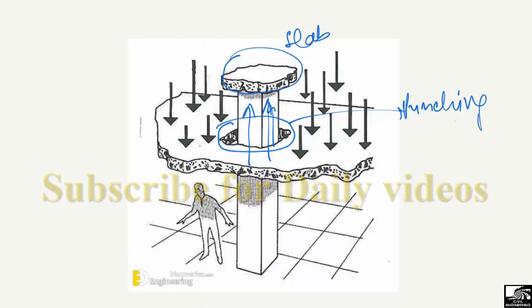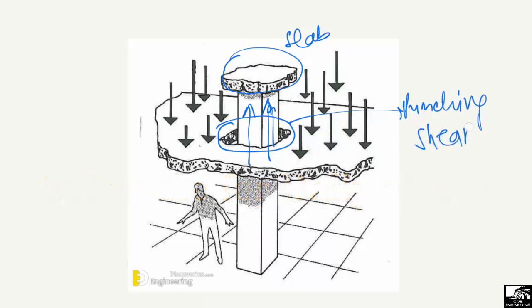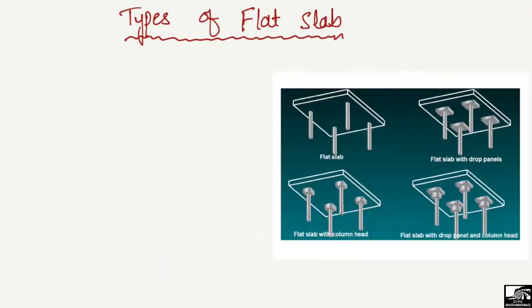This punching shear should be avoided in order to prevent the destruction of the slab. So we have different types of slabs in order to avoid this punching shear. There are four different types. The first one is the normal flat slab, where we have only the slab and the columns. This is the general type of the flat slab.